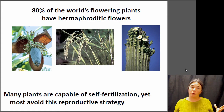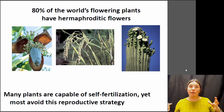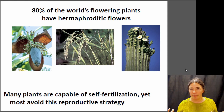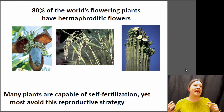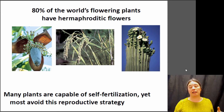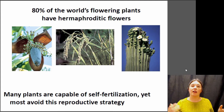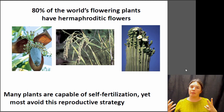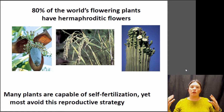Most flowers in the world are perfect — they do have both male and female parts, and most flowers could fertilize themselves. But why would you not want to fertilize yourself? Hopefully you're thinking about inbreeding. Inbreeding is a very bad thing generally. If you have a recessive allele that's very bad and you breed with yourself, you have a very high chance of having offspring with two of those recessive bad alleles, and then you actually express the trait. So inbreeding is generally not a good thing. How do plants avoid breeding with themselves?